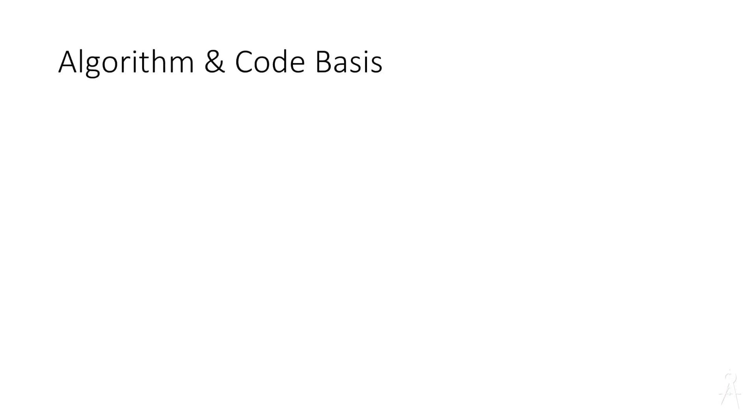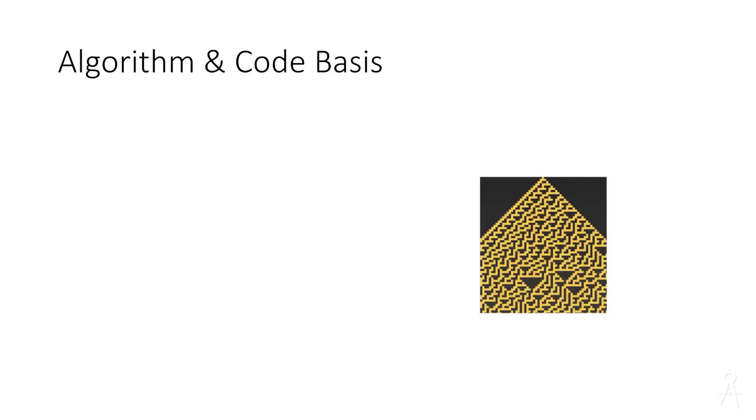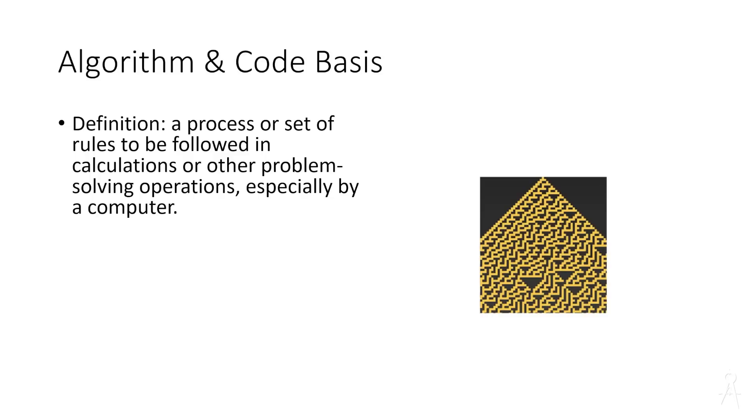So here is the algorithm and code basis. Essentially, this is actually a little diagram for a little code that was generative with a few small sets of rules. And as it gets larger, it solves bigger and bigger challenges. Essentially, an algorithm is a process or set of rules that can be followed in calculations or problem-solving operations, especially by a computer. Simple mathematical rules can derive complex value on scale based on these types of ideas with an algorithm.